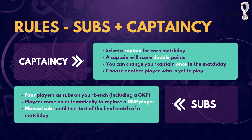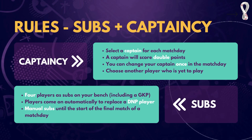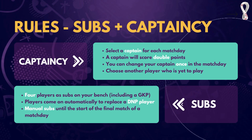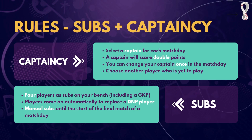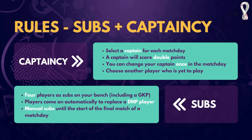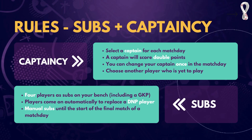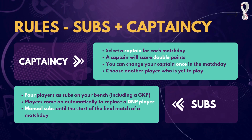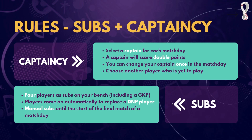Coming to substitutions — there'll be four players as substitutes on your bench, including a goalkeeper. If you don't make any changes and a player in your starting 11 hasn't played, a bench player will come on as an automatic sub to replace them. For example, if Messi doesn't start, he will automatically be substituted by a different player on the bench. The order of the bench player coming in depends on the formation and the rules of the fantasy game.